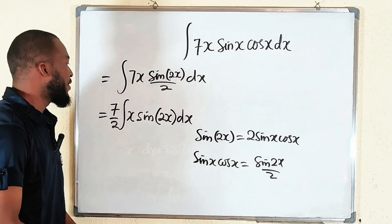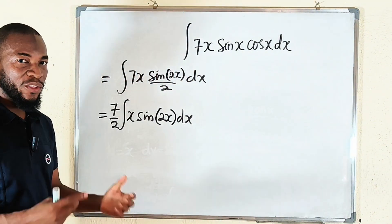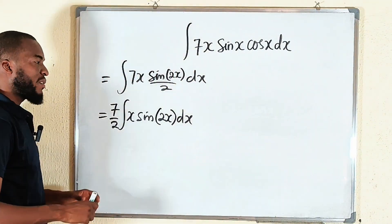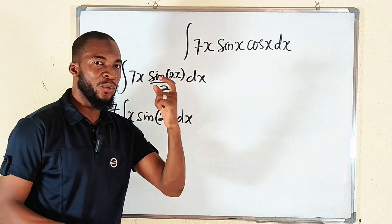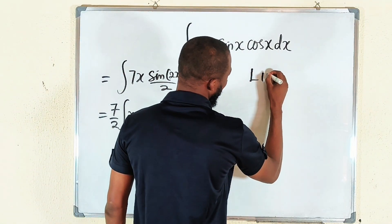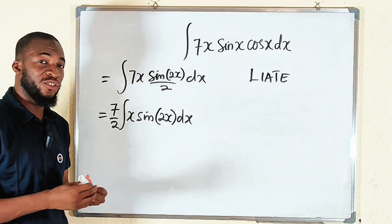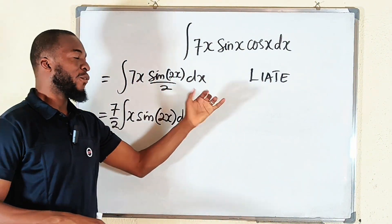Now we are going to apply integration by parts. But we have to decide u and dv, because remember it is the integral of u dv. So you can use this acronym, LIATE, to decide which function to substitute as u, from left to right.